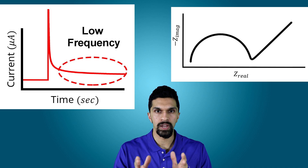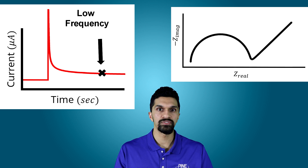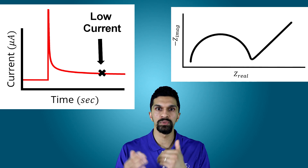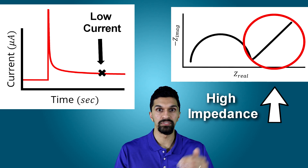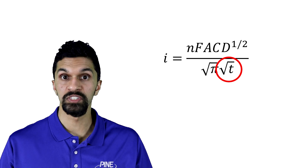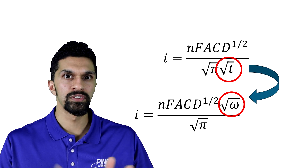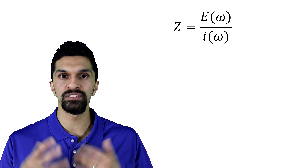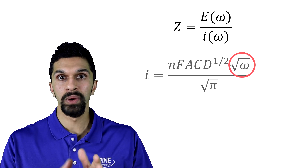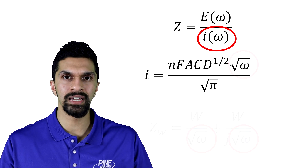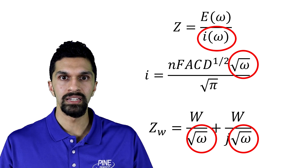As we move along the chronoamperogram, we go to lower and lower frequencies and observe that the current also decreases. As the current decreases, we get higher impedance. It is very interesting to note that in the Cottrell equation, we observe a 1 over the square root of time dependence on the current. This becomes a square root of frequency dependence. This square root of frequency dependence makes it into EIS because the impedance is a frequency-dependent voltage divided by a frequency-dependent current. If you have a square root of frequency dependent current in the denominator based on the Cottrell equation, we can start to rationalize why we get a 1 over the square root of frequency dependence in the Warburg circuit element.